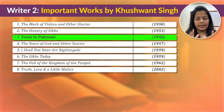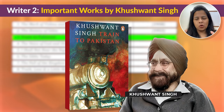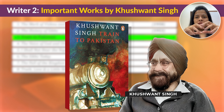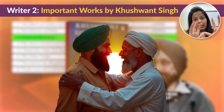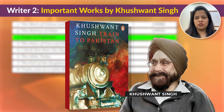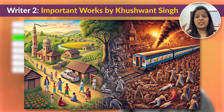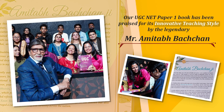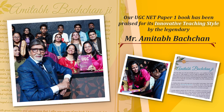Train to Pakistan is a novel you have to read in detail — at least its chapter-wise summary. It tells the story of a small village called Mano Majra during the 1947 partition. This village was very peaceful, with Sikhs and Muslims living together harmoniously. But everything changed when a train arrived filled with the bodies of people killed during the violence of partition. The villagers are forced to face the horrors of hatred and violence, and the novel shows the painful human cost of partition and how it broke communities apart.